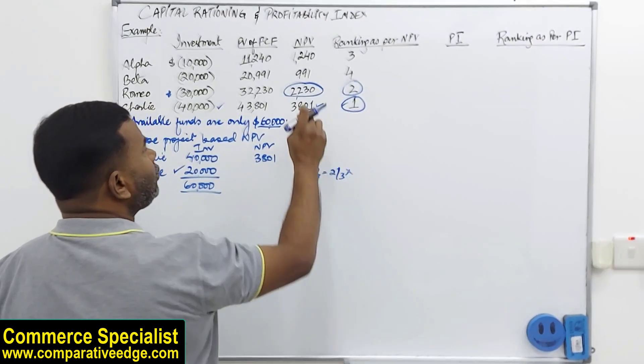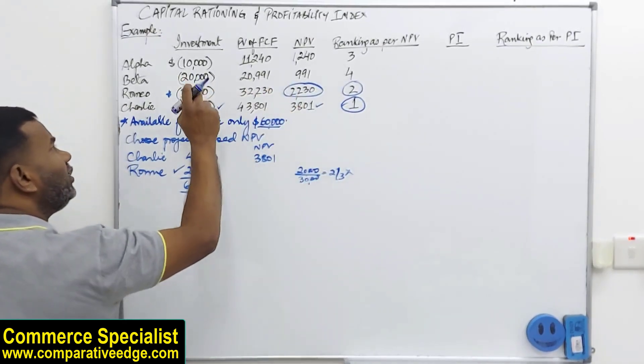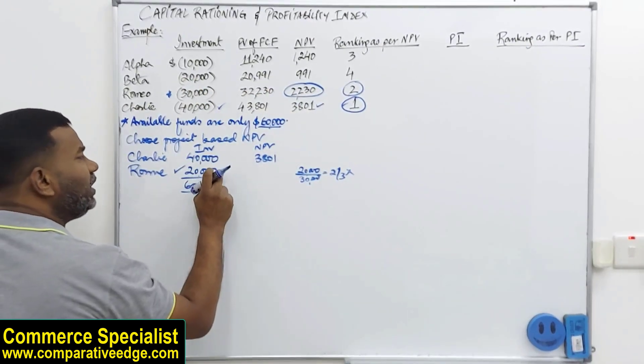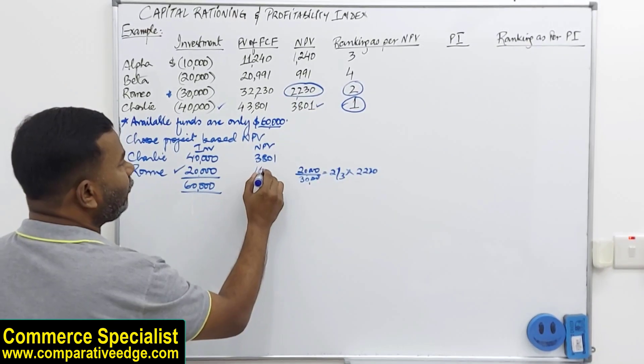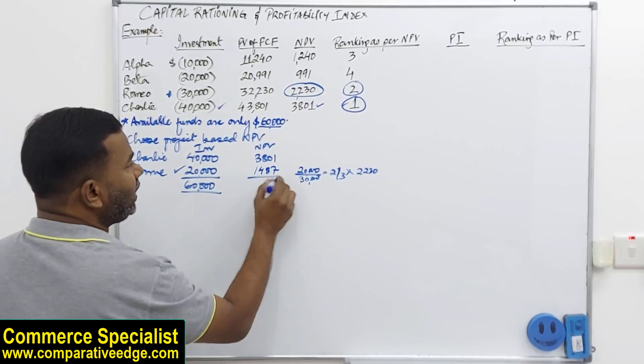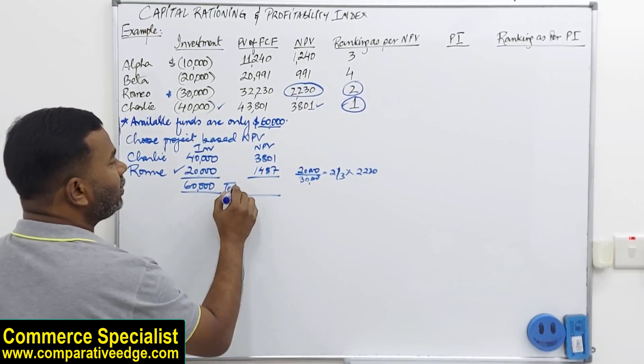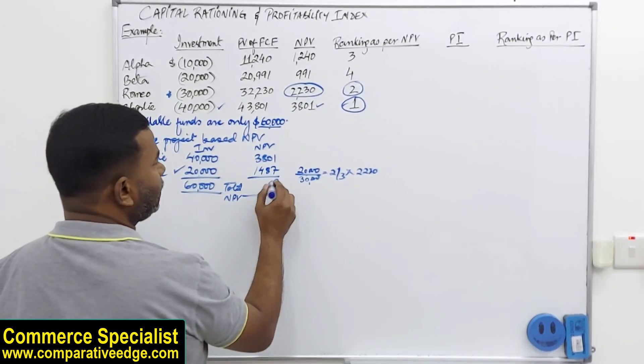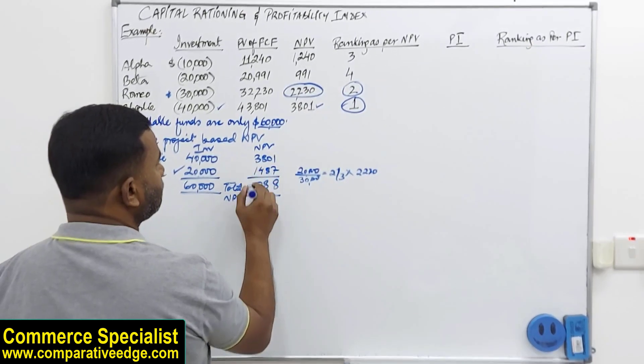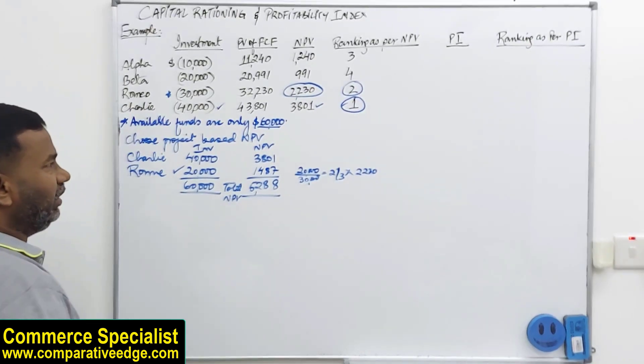So I am taking two-thirds of this because I am not investing full 30,000 here. I am only investing 20,000. So I will take two-thirds of this amount. So two-thirds of this will give me 1,487. So that gives me a total NPV of 5,288.